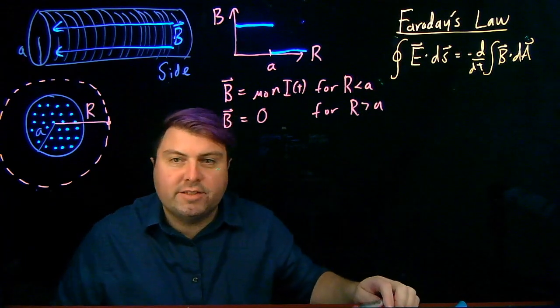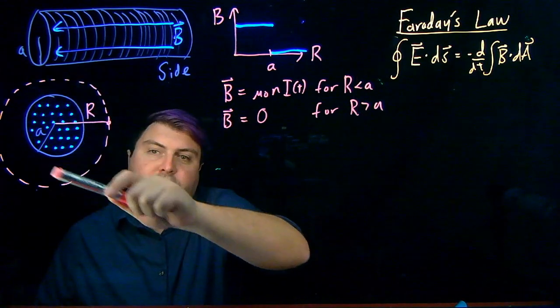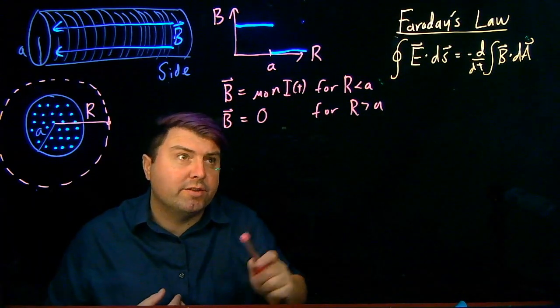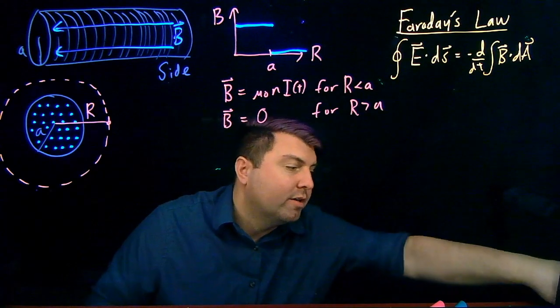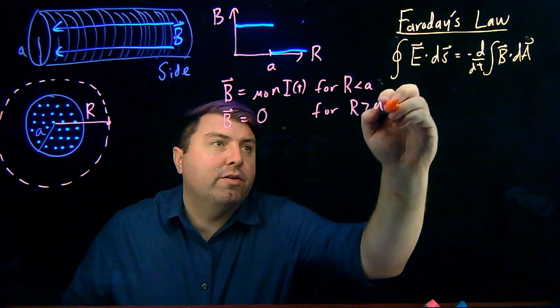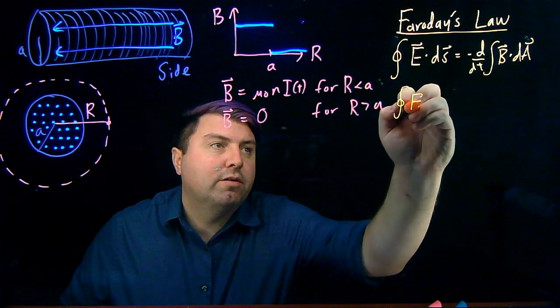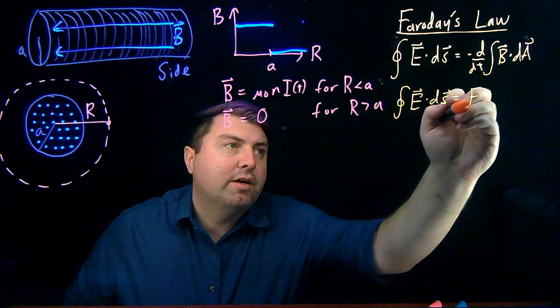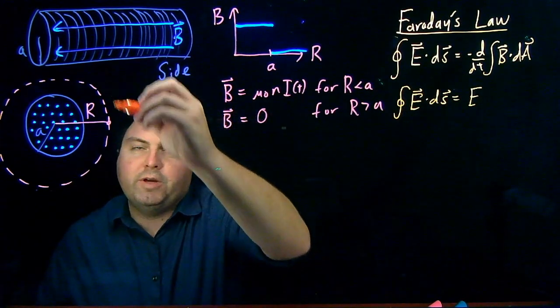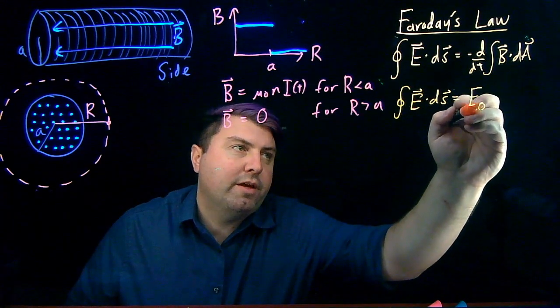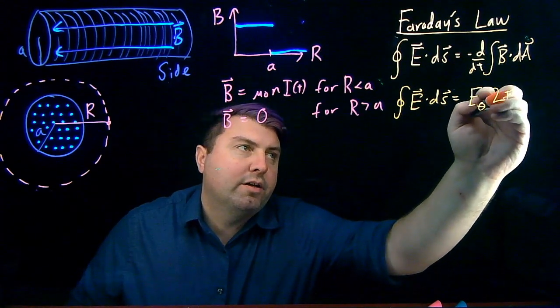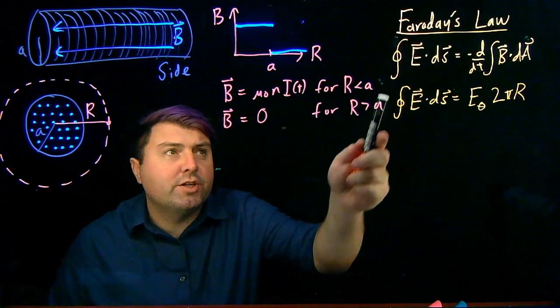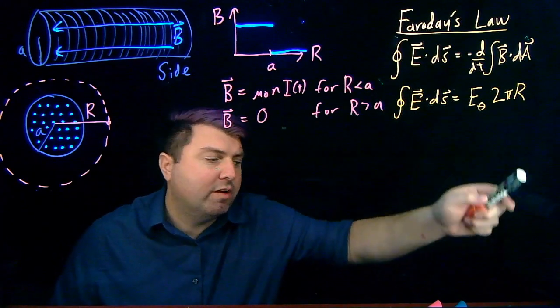So, as we look at this E dot dS, if we choose a circle, the radius doesn't change, and our electric field only depends on the radius, so we can pull it out. So, we can say that our closed integral of E dot dS is equal to the electric field parallel to this, so E in the theta or the tangential direction, times 2πr. So, we've solved this side, we haven't solved this side.